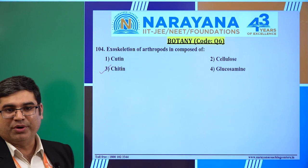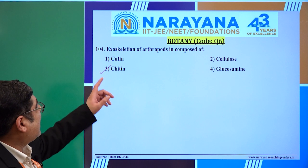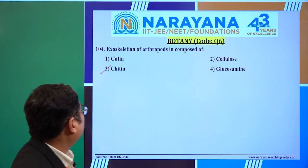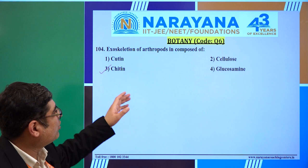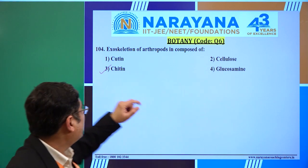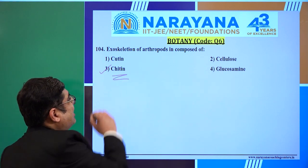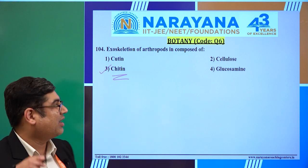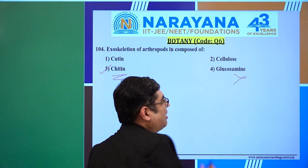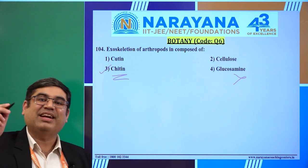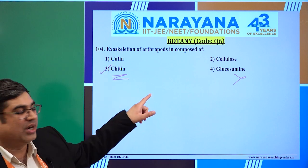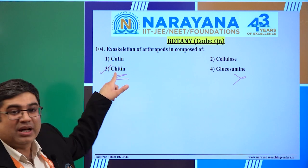Here is question number 104 — a very tricky question. The cell wall of our food coat is composed of — the four options given are: cutin (the waxy material), cellulose (a carbohydrate), and then chitin — which is absolutely correct. It cannot be glycogen/glucosamine, because N-acetyl glucosamine is a monomer unit, and the actual polymer unit here is chitin.